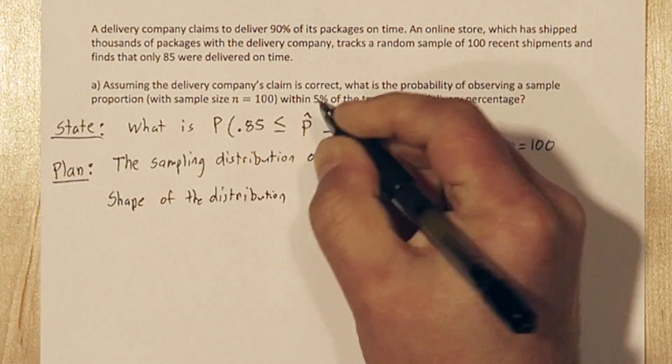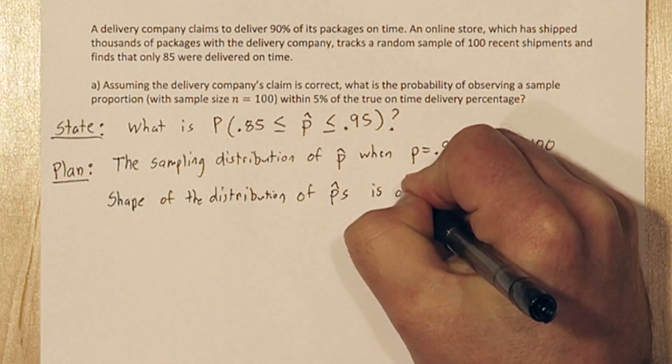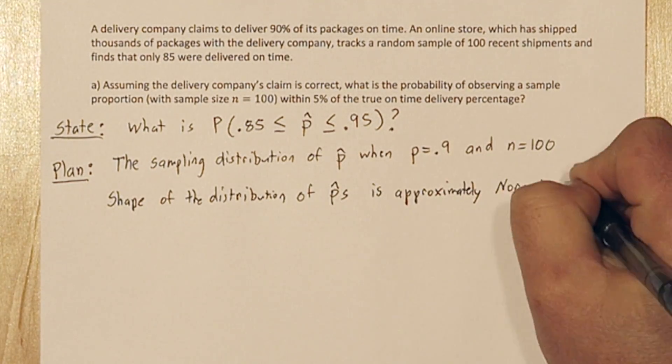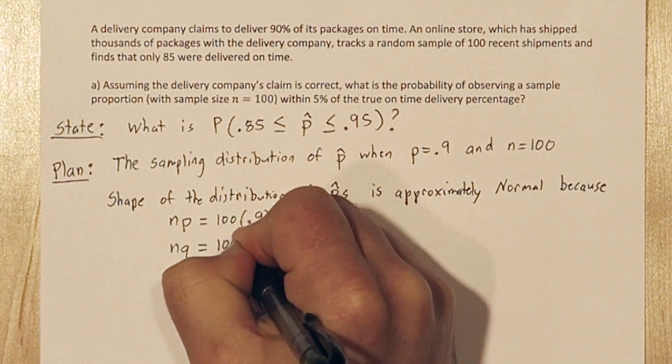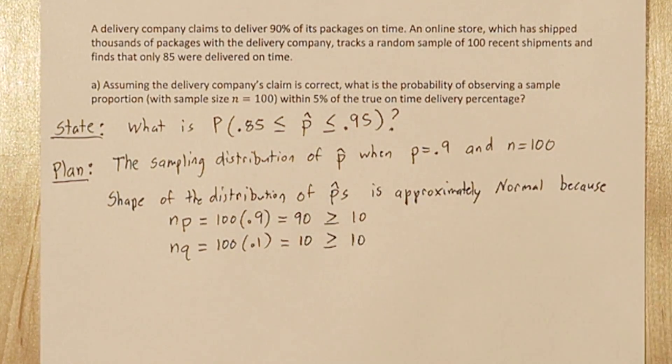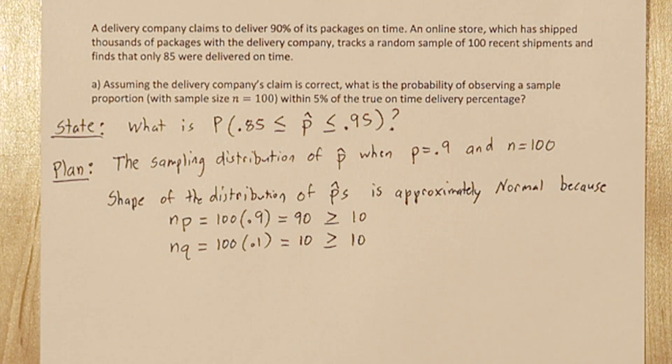The shape of the sampling distribution of p hat is approximately normal because np is 90, which is greater than 10, and nq is exactly 10. This is good news because we can use normal calculations.